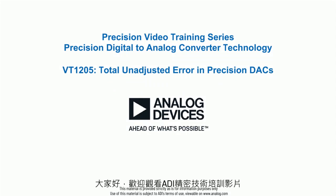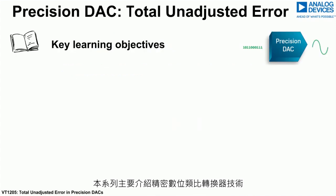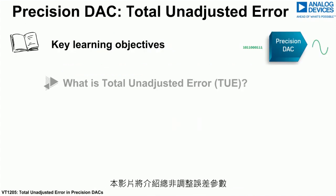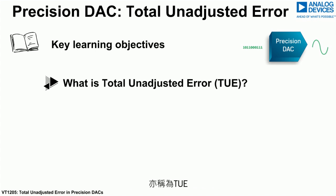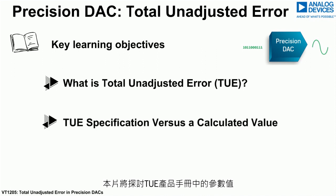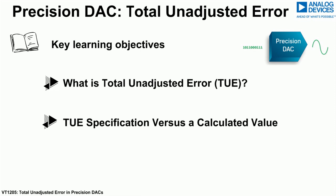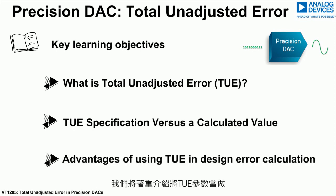Hello and welcome to the Analog Devices Precision Training video that focuses on precision digital-to-analog converter technology. This video will go through Total Unadjusted Error specification, also known as TUE, and how this relates to digital-to-analog converters. Discussed are the key differences that exist between the TUE datasheet specification when compared with a calculated TUE value, and we will highlight the advantages that the TUE specification offers when considered as part of the error source calculations for your design.